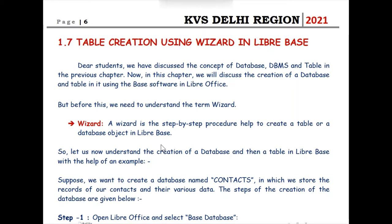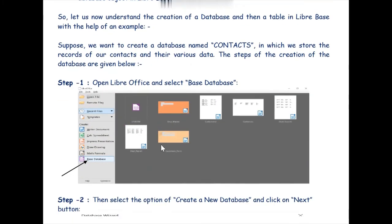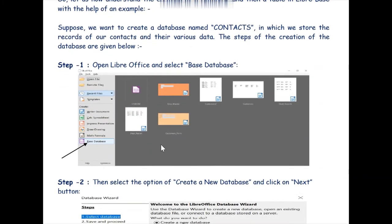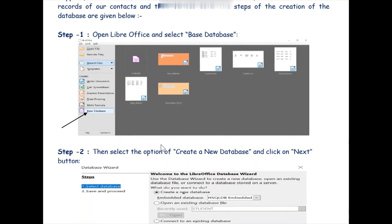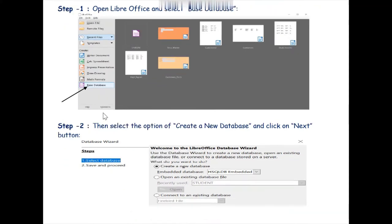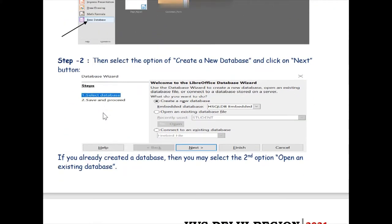Now let us create a table by using a wizard. We have a series of steps in creating a table using a wizard. The first step, as you can see on the screen, is to open LibreOffice and select the Base database as shown here by the arrow. As soon as you click on this particular button you will get the next screen.